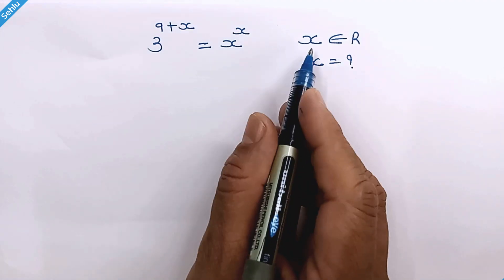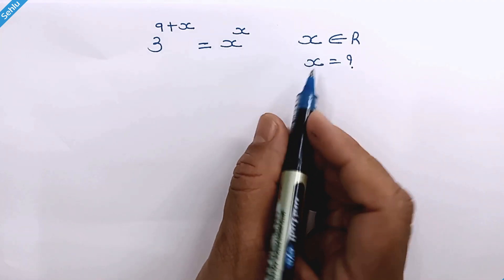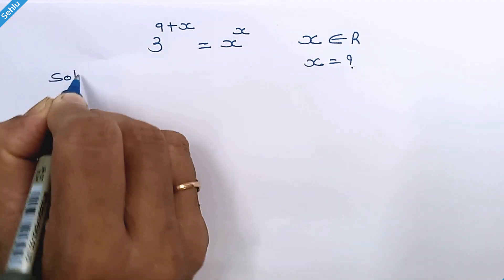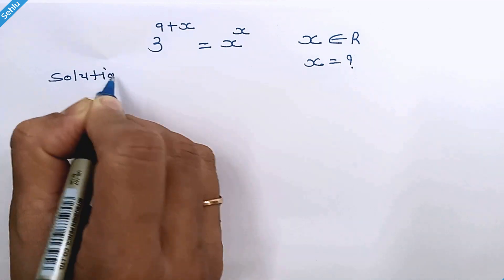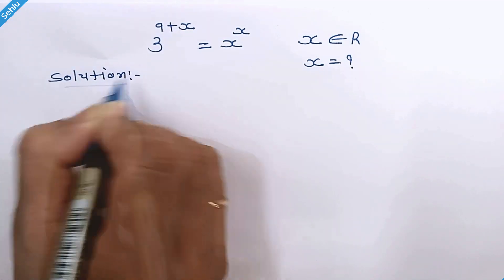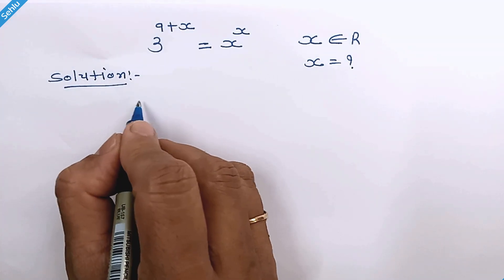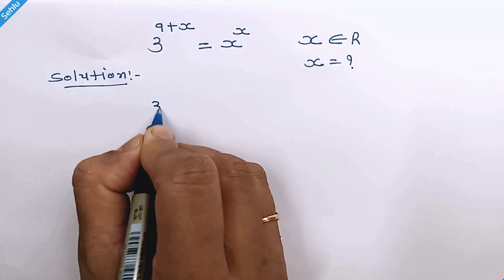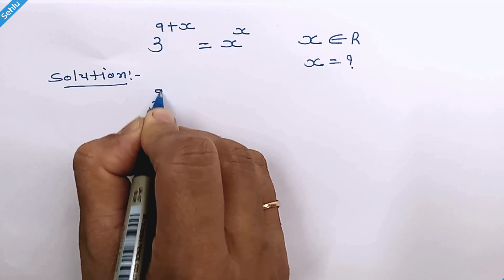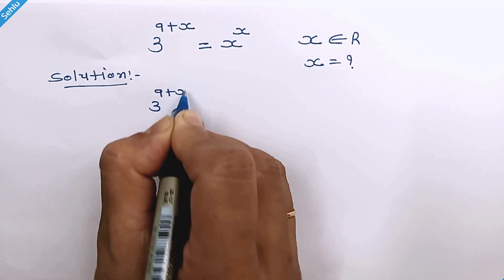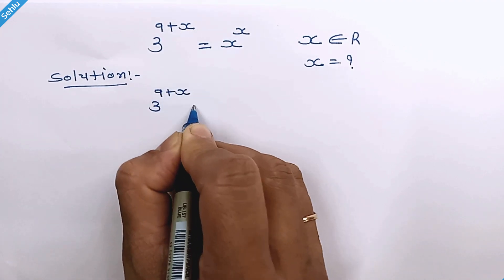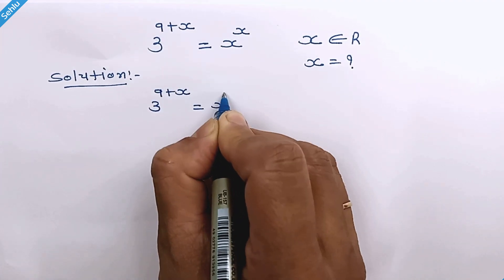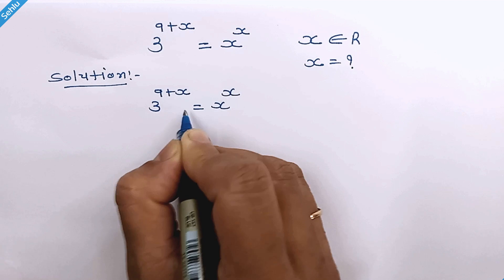Hello friends, let's find the real value of x. Let me put the question first. We have 3 raised to 9 plus x is equal to x raised to x.